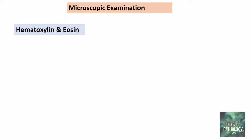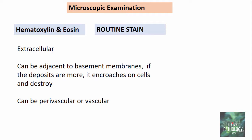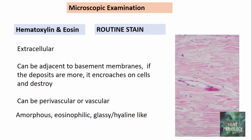Microscopically, on routine hematoxylin and eosin stain, the deposits are predominantly found extracellularly, adjacent to basement membranes. If the deposits are more extensive, they encroach on and can destroy cells. They can be seen in the interstitial tissues, perivascularly, or within vessel walls. They appear amorphous, eosinophilic, and glassy or hyaline-like.